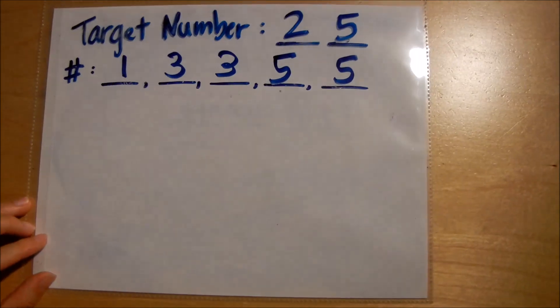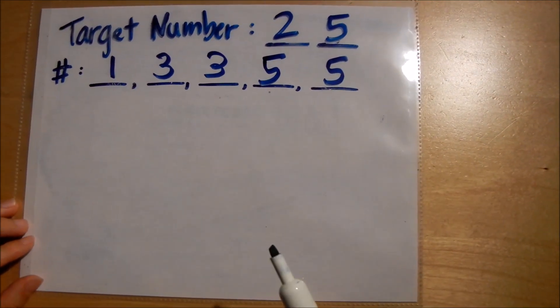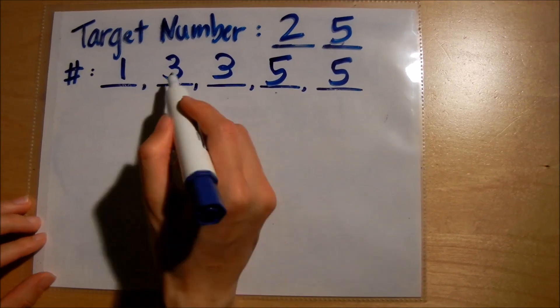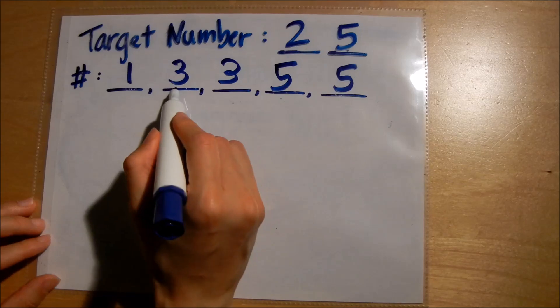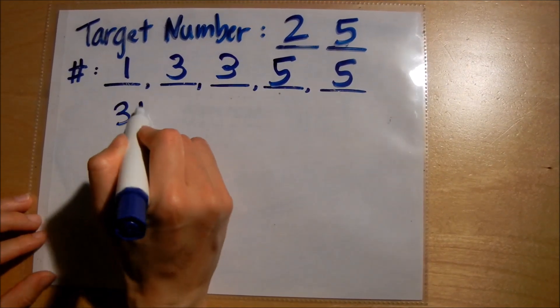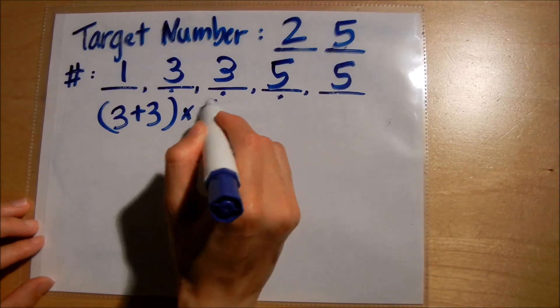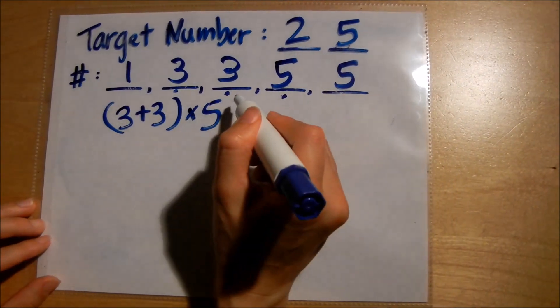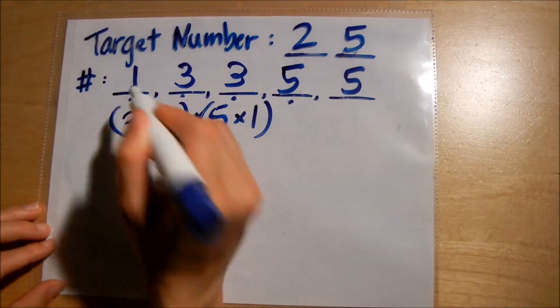Now I'm trying to think of another way that I can get twenty-five just to show that there are many ways you can get the answer or close to the answer. This time I'm thinking like thirty minus five. I'm going to make thirty with three plus three is six times five is thirty, and then I'll just do times one.